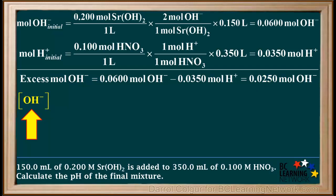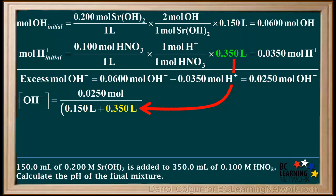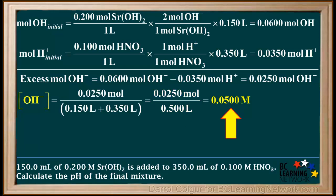Since the hydroxide ion is in excess, we calculate its concentration in the final mixture. It is equal to 0.0250 moles divided by the total volume of the solution, which is 0.150 liters of strontium hydroxide solution plus 0.350 liters of HNO₃ solution. So the concentration of OH⁻ is 0.0250 moles over 0.500 liters, which equals 0.0500 molar.